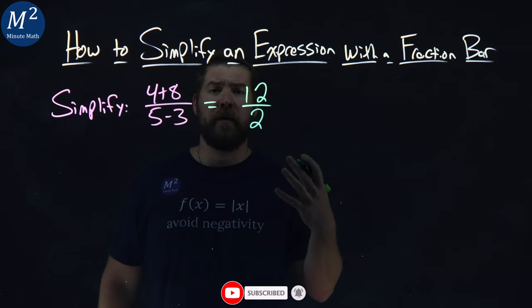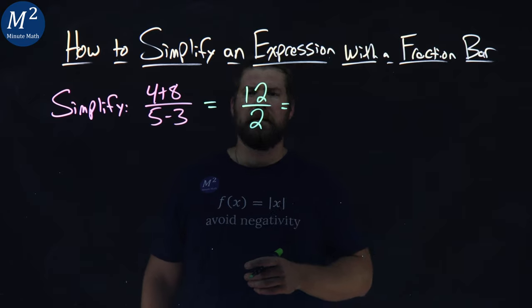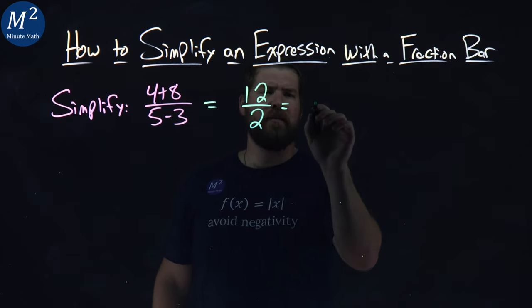Now from here, we've got to simplify this fraction. Well, 12 over 2 is the same thing as 12 divided by 2. You should know that. 12 divided by 2 is 6.